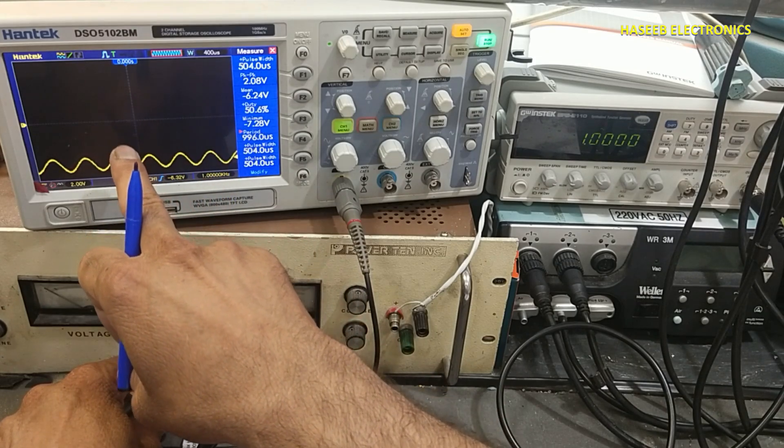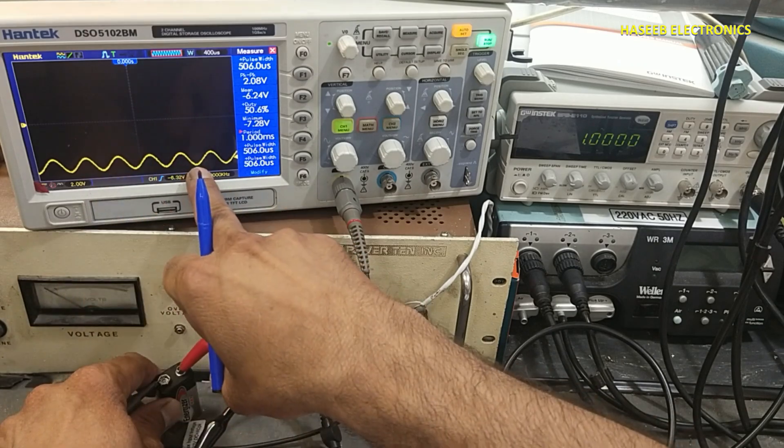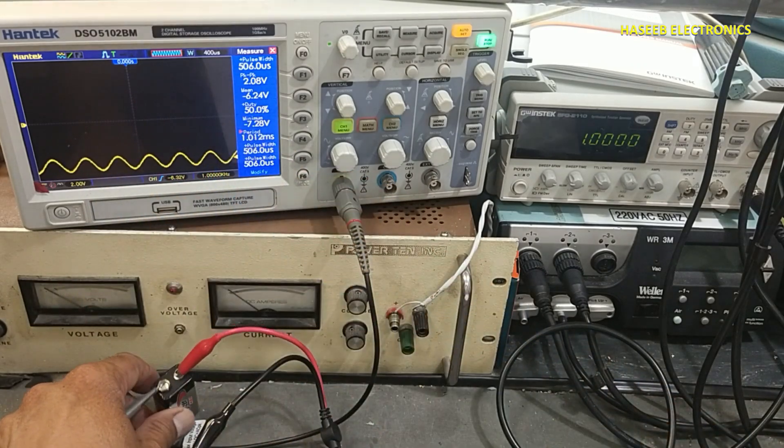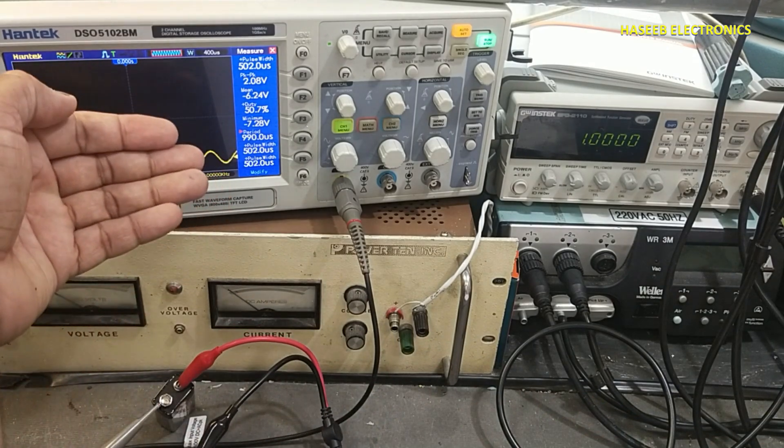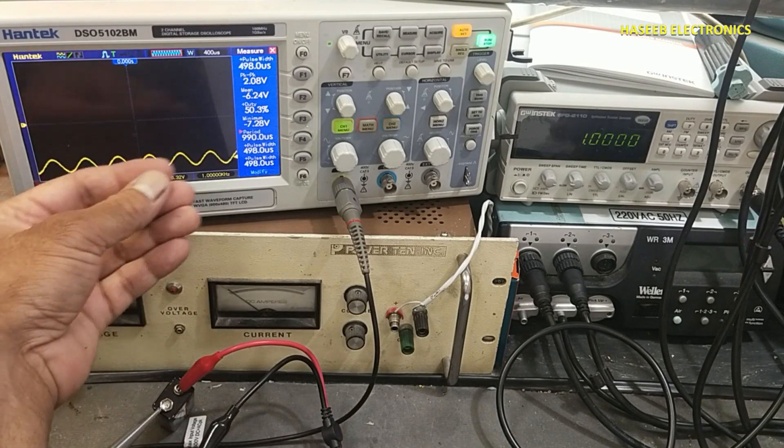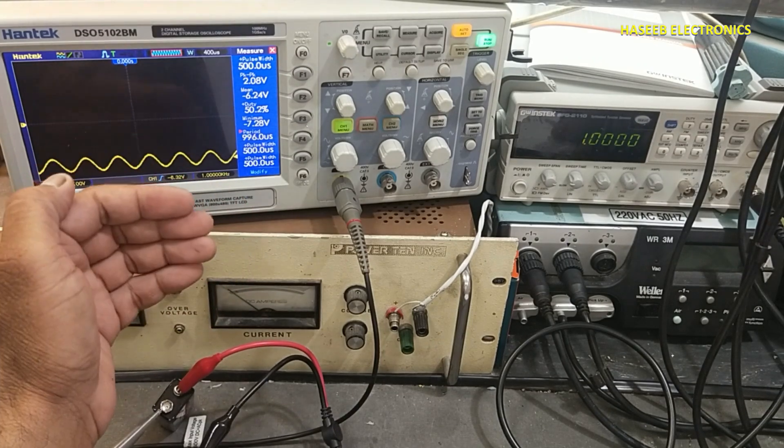Zero line to negative side. This signal has now 6.2 volt negative offset. Any signal that is below from the zero line will have negative offset.